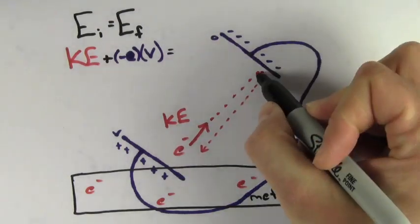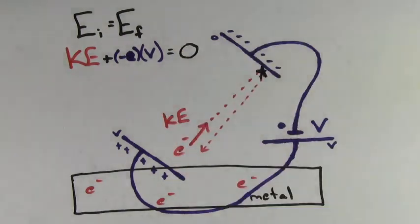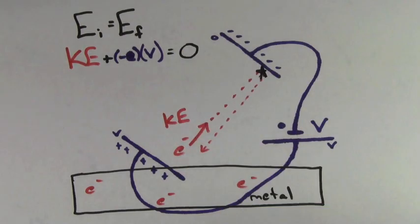We're assuming the electron stops, that's why it's called the stopping potential, so its final kinetic energy is zero. And since the electric potential at the negative plate is zero, that means the electric potential energy of the electron is also zero at that point. So the total final energy is just zero.